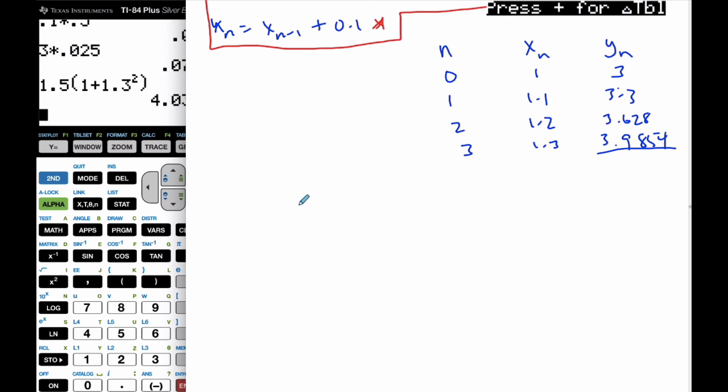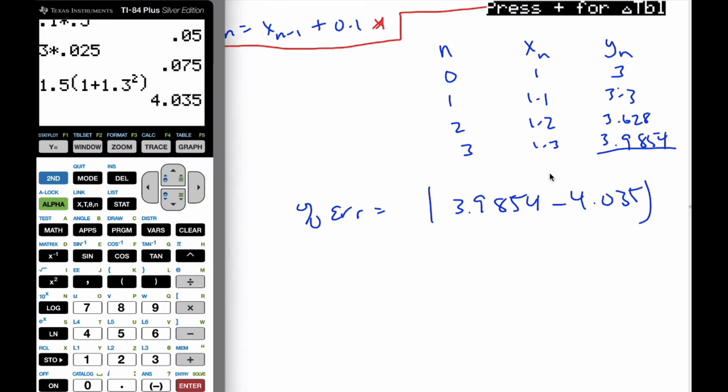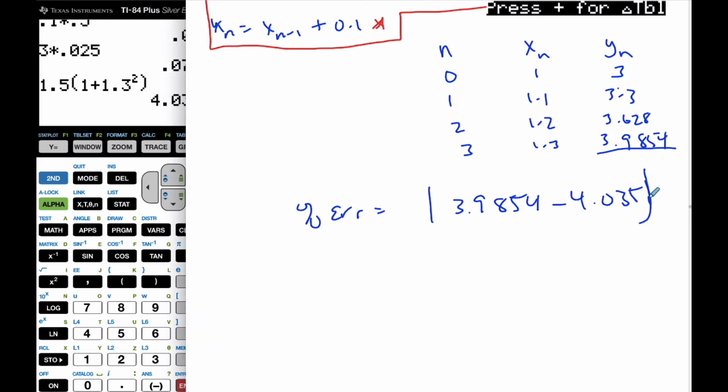So the percent error is going to be the absolute value of 3.9854 minus 4.035, divided by 4.035 times 100.